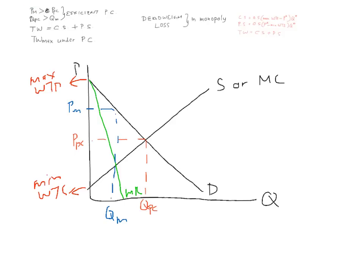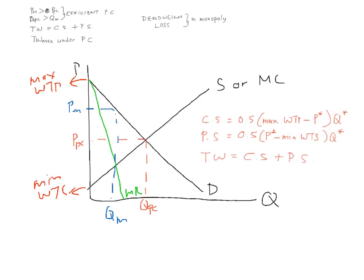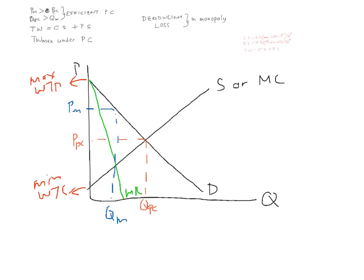Consumer surplus is the difference between the maximum willingness to pay minus the equilibrium price. The maximum willingness to pay is still there, but the selling price is now higher than before. So consumer surplus is lower than before — consumer surplus under monopoly is now equal to just this smaller area.